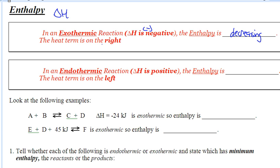So we're just going to use the word decreasing, and the heat term is on the right. Endothermic is the opposite — delta H is positive, which means you're gaining energy, so enthalpy is going to be increasing. We're not going to be drawing a bunch of graphs with delta H pluses and minuses. We're simply going to say enthalpy is decreasing in exothermic and increasing in endothermic.